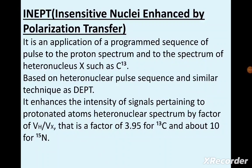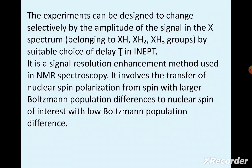INEPT enhances the intensity of signals pertaining to protonated atoms in the heteronuclear spectrum by a factor of γH/γX — that is, a factor of 3.95 for 13C and about 10 for 15N. The experiment can be designed to selectively change the amplitude of signals in the X spectrum belonging to XH, XH2, and XH3 groups by suitable choice of the delay τ in INEPT.